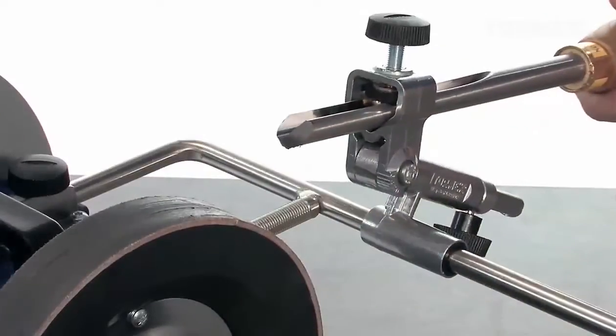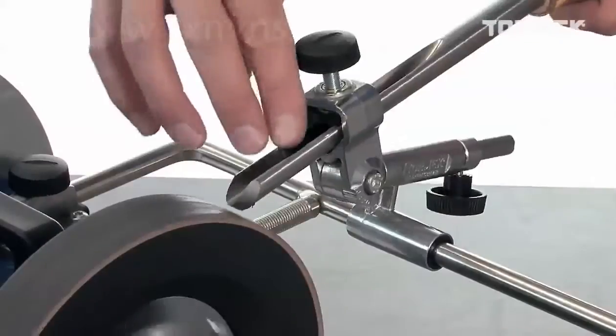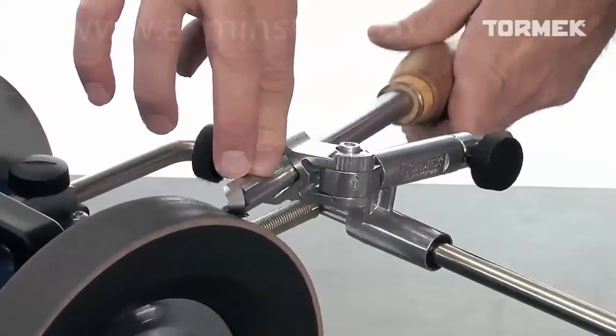Then, hone away the burr and polish the bevel with the tools still mounted in the jig, and you will not risk rounding off the edge.